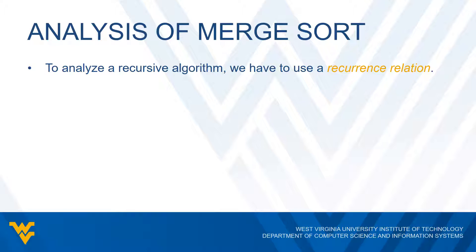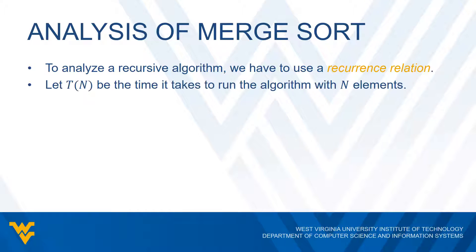Instead of giving a formal definition, I'm going to use the merge sort algorithm as an example of a recurrence relation. What we're going to do is let T(N), or T of N, be the time it would take to run the algorithm with N elements.